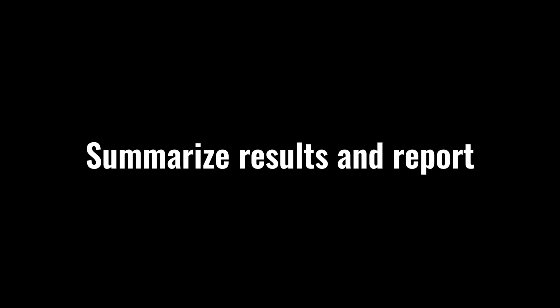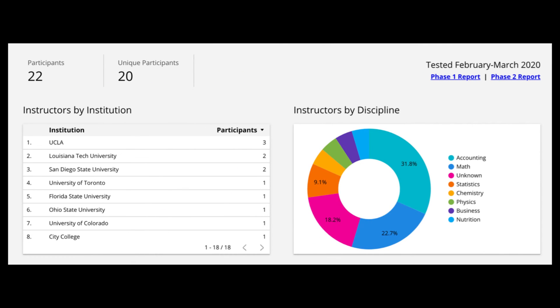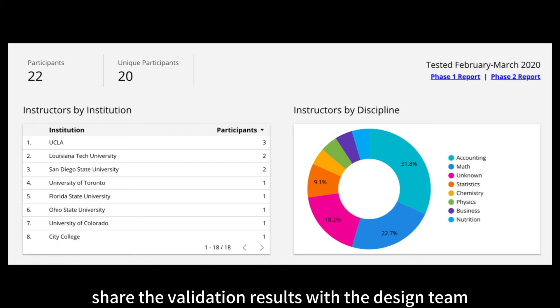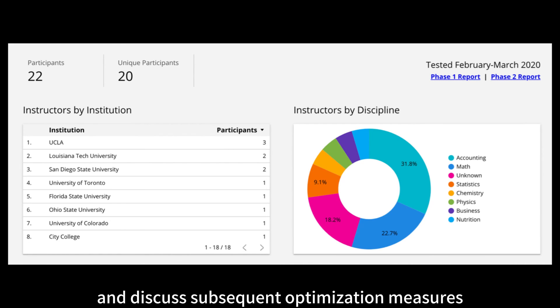Summarize Results and Report. Summarize the validation findings and prepare a validation report. Share the validation results with the design team and relevant stakeholders, and discuss subsequent optimization measures.